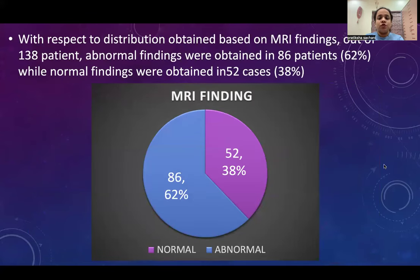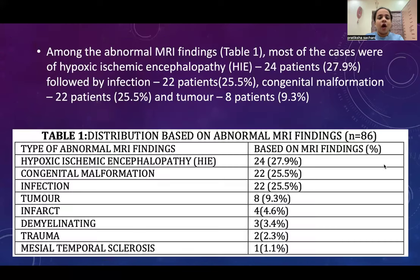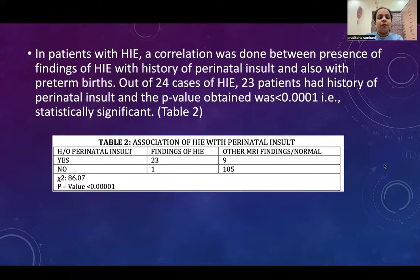With respect to distribution based on MRI findings, out of the 138 patients, abnormal findings were obtained in 62% and normal findings in 38%. Among the abnormal findings, the most cases were of HIE at 27.9%, followed by infection at 25.5%, congenital malformation at 25.5%, and tumour at 9.3%.